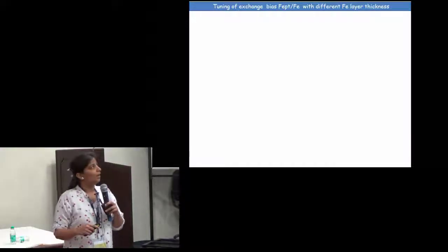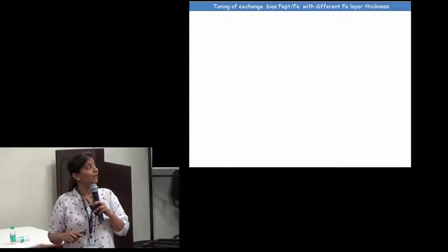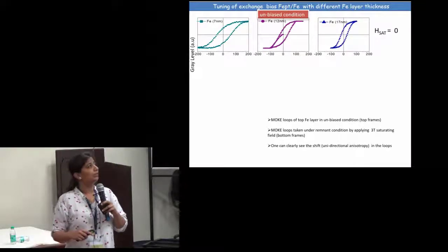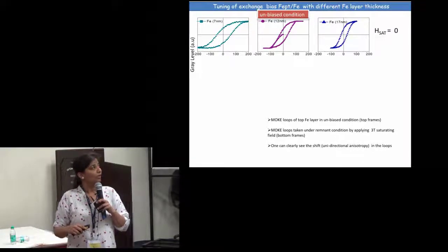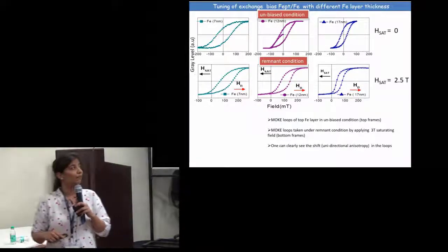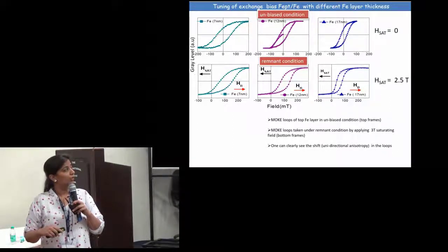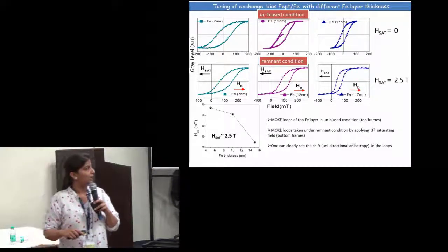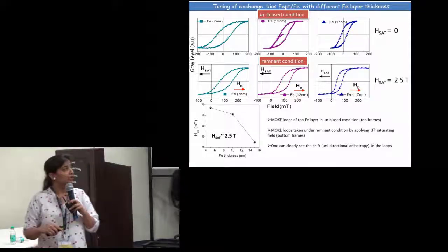We tried to observe exchange bias with different iron layer thicknesses. In the unbiased condition, when the saturating field was applied at zero, all loops were unshifted. But in a remanent condition — for example, applying a field of about 2.5 tesla — all loops were shifted in a positive direction. There is also a thickness dependence: the exchange bias shift decreases with increasing thickness.